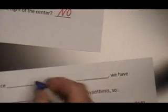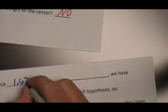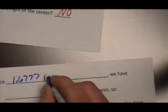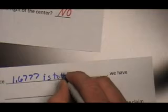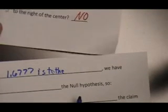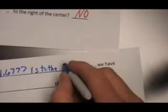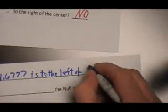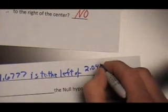So let's wrap this up. Finally, we can say, since our test statistic of 1.6777 is to the left, and by the left I mean it is close to zero, since this is a right-tailed test, is to the left of 2.045.